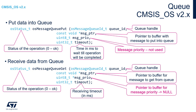If the put operation is not successful within the given timeout, the returned osStatus_t value will be non-zero — specifically osTimeout. It is very important when coding with OS functions to always check the return value, especially for osStatus_t type functions, so you know whether the operation was successful.